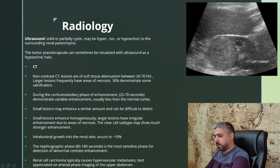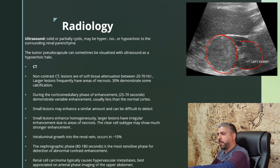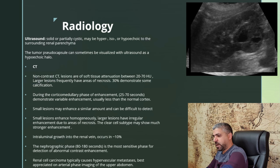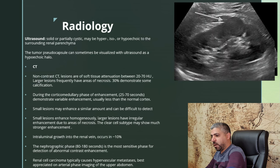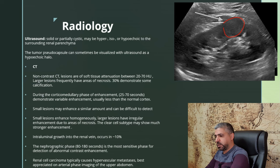They can also have cystic changes and even hemorrhage. On ultrasound, they appear as solid or partially cystic masses and can be hyperechoic, isoechoic, or even hypoechoic to the surrounding renal parenchyma. They might have a pseudo-capsule appearing as a hypoechoic halo around them. In these examples, we can see a hyperechoic renal cell carcinoma, a heterogeneously hypoechoic mass with cystic changes, and a solid hypoechoic mass in the renal cortex — all renal cell carcinoma.